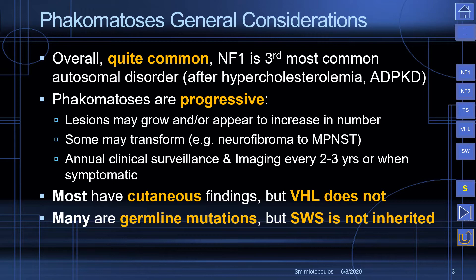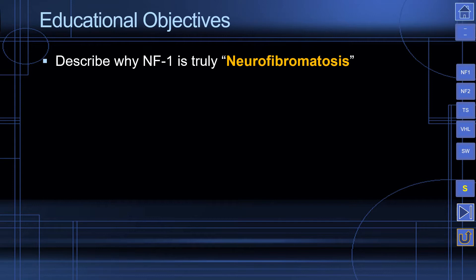A neurofibroma can become a malignant peripheral nerve sheath tumor. In general, annual clinical surveillance and imaging every couple of years are suggested even when patients are asymptomatic. Most phacomatoses have cutaneous findings, but Von Hippel-Lindau disease does not. Most are caused by germline mutations, but Sturge-Weber syndrome is not inherited.